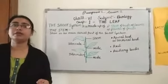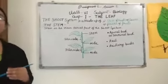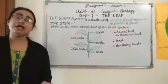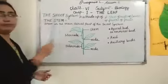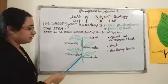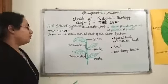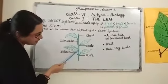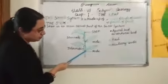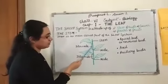Stem helps in the upward movement of water and minerals absorbed by the roots and transports them up to the leaves. Food prepared by the leaves is transported downwards to the roots and other parts of the plant by the stem. The points on the stem from where leaves and branches originate are called nodes. The part of the stem between two successive nodes is called an internode.